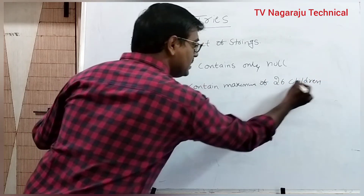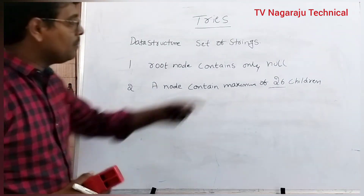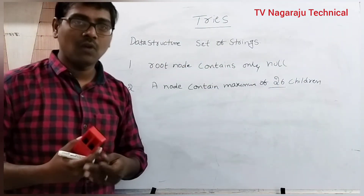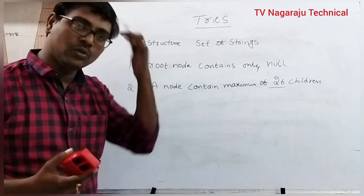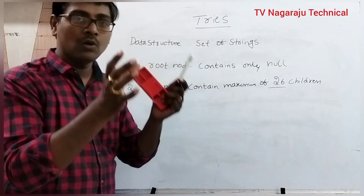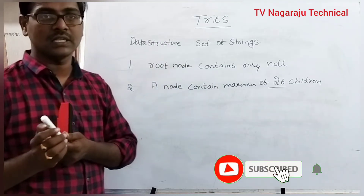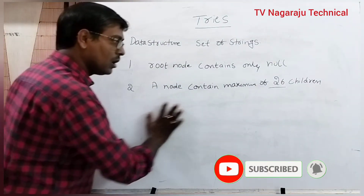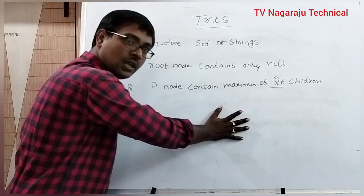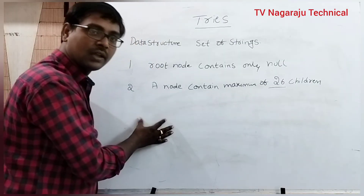What does twenty-six children mean? Because a string is a combination of alphabets, that is, A to Z. In the worst case, we have strings of different prefixes. That is, assume we have in the worst case twenty-six strings, and each string starts with a different character.